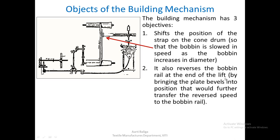The building mechanism also reverses the bobbin rail at the end of the lift by bringing the plate bevels into position, which further transfers the reversed speeds to the bobbin rail. This reversal of the bobbin rail is done with the help of plate bevels.